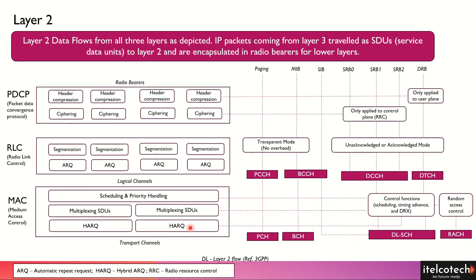Error detection keeps happening across different layers. There are different transport channels carrying information from the upper layers: paging, broadcast, and downlink shared channel. In the uplink, there is a Random Access Channel in the MAC layer. The MAC layer also takes care of timing advance, control functionality, and scheduling. These important protocols each have their own functionality in the overall protocol layer grid.